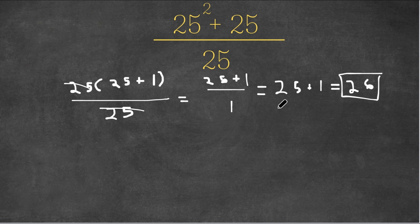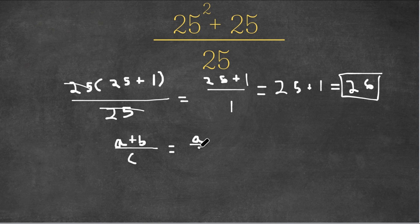Now, the second method is, as you can see, if we have a plus b over c, right, this is the same thing as a over c plus b over c.